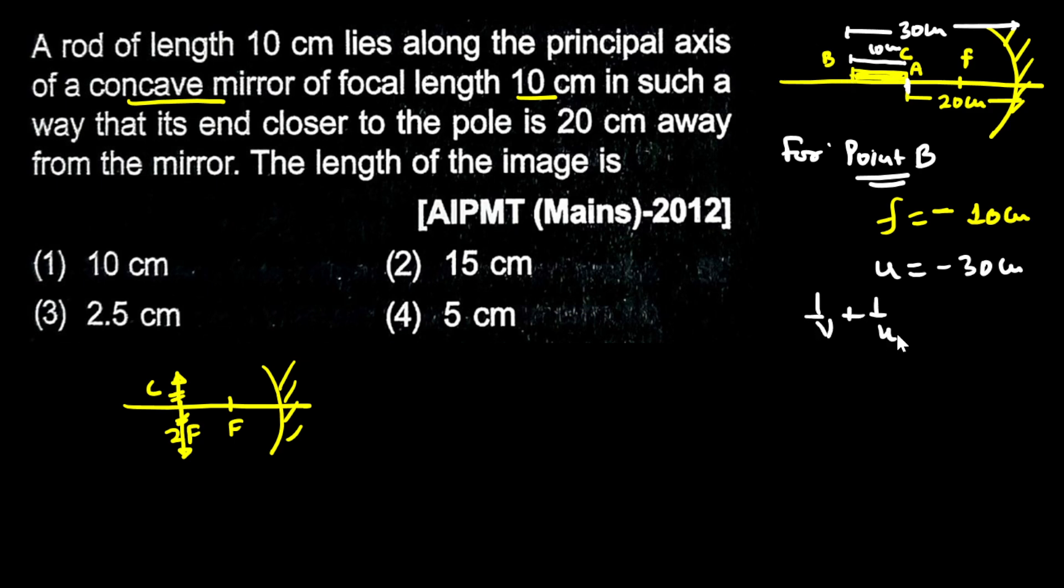Using the mirror formula: 1/V + 1/U = 1/F, so 1/V = 1/F - 1/U. The focal length is minus 10, and U equals minus 30.